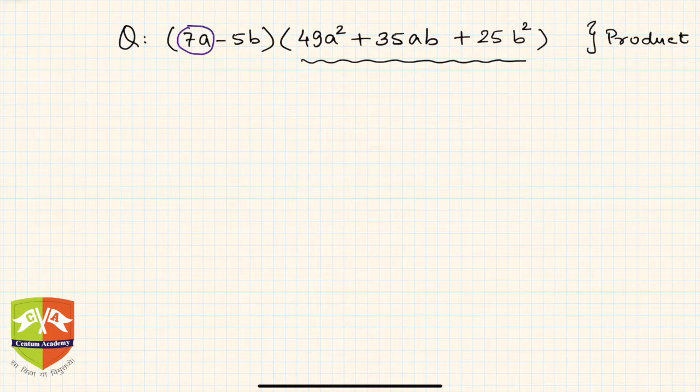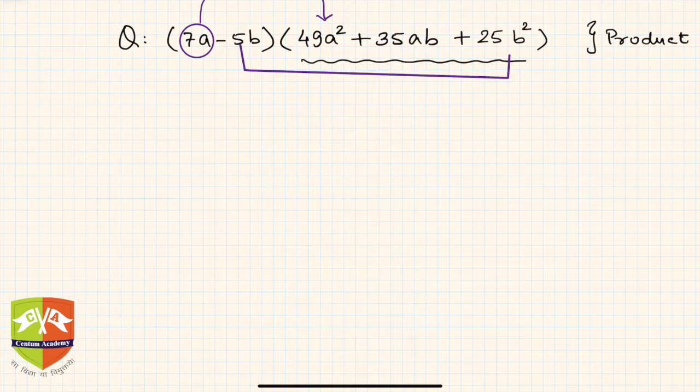I can see 7a, and 7a square is 49a square, isn't it? Similarly, if you see 5b, 5b square is 25b square. Does it indicate something? Have we learned an algebraic identity where there are two terms in the first factor and three terms in the second factor?